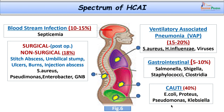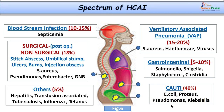Other healthcare associated infections include transfusion associated infections such as syphilis, malaria, hepatitis, and HIV. There can also be tuberculosis, influenza, and tetanus. This represents the whole spectrum of healthcare associated infections.